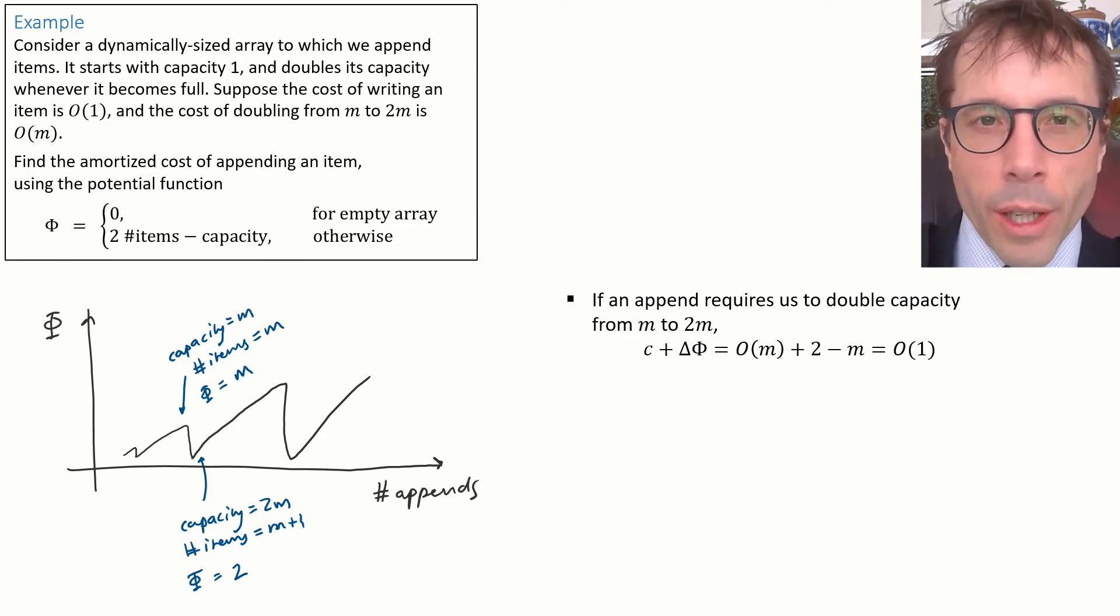If it does require doubling, this is what it looks like. We started off with m items in capacity m. We ended up with m plus 1 items in capacity 2m. So the old potential was m, the new potential is 2. Thus, the amortized cost C plus delta phi is the true cost big O of m plus delta phi 2 minus m, which is big O of 1.